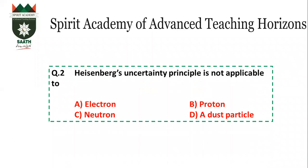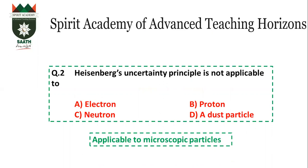Question number 2: Heisenberg's uncertainty principle is not applicable to which particle? Heisenberg's uncertainty principle is not applicable to microscopic particles — this means it does not apply to electron, proton, or neutron. It is also not applicable to dust particles.